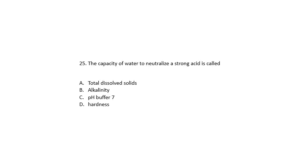Question 25. The capacity of water to neutralize a strong acid is called total dissolved solids, alkalinity, pH buffer of 7, or hardness. It's going to be alkalinity. Alkalinity is the capacity of water to neutralize strong acids.